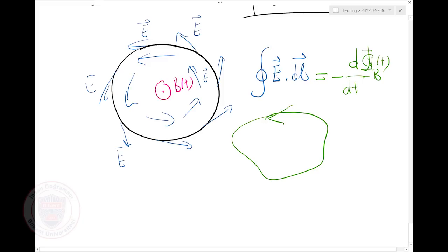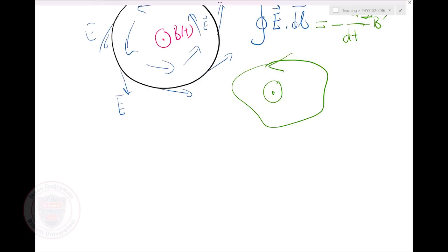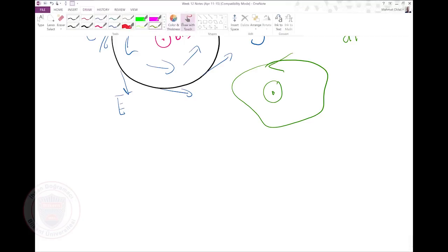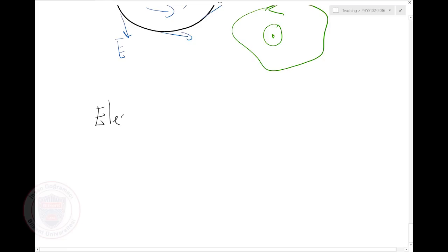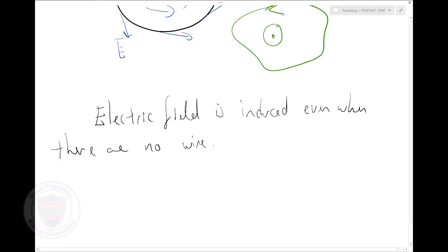The minus sign tells me about the direction of circulation of my imaginary loop — so this would be a positive direction and you count Φ to be in this positive direction. Now I should state this clearly: this is important. The electric field is induced even when there are no wire loops to carry a current.